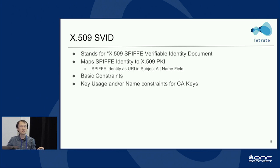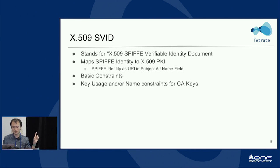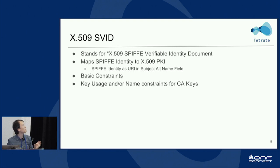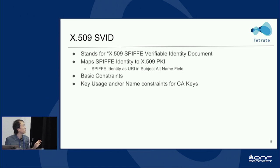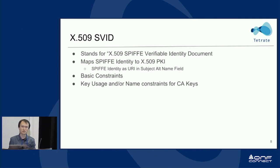SPIFFE ID itself doesn't define a verifiable ID format. That part is covered by X509 SVID — the verifiable identity document. It basically maps the SPIFFE identity to X509 PKI, and includes the SPIFFE identity in the SAN field of the X509 certificate.